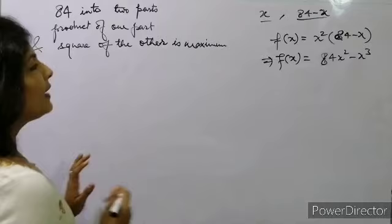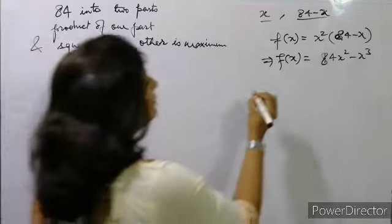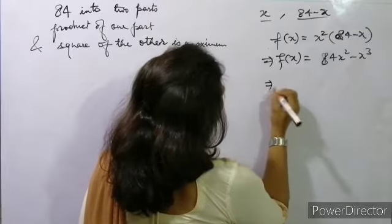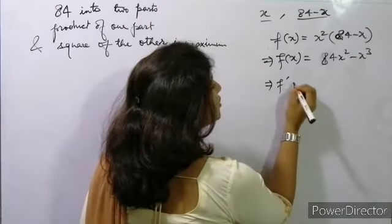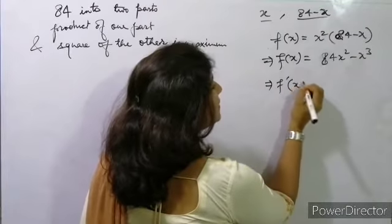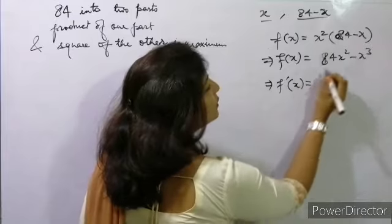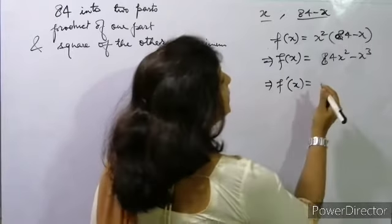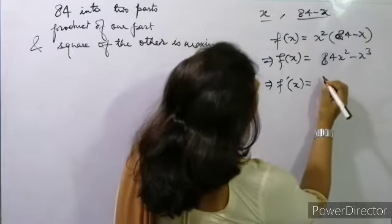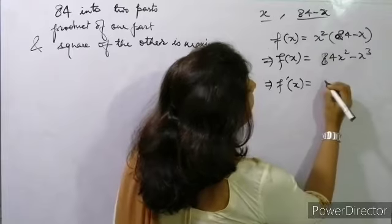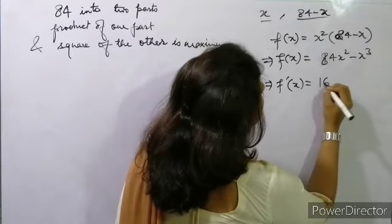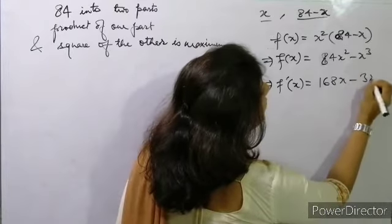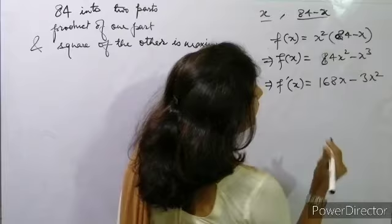Now we have to find f'(x). So f'(x) = 84×2·x - 3x² = 168x - 3x².